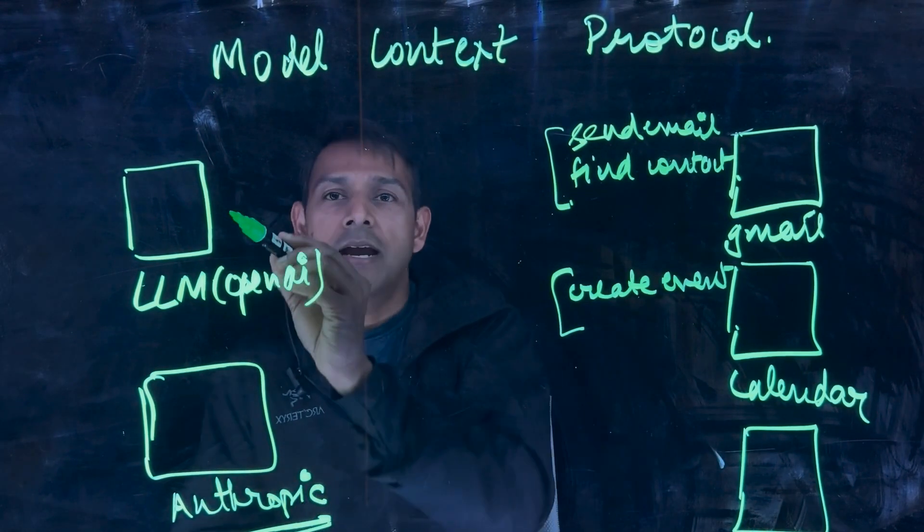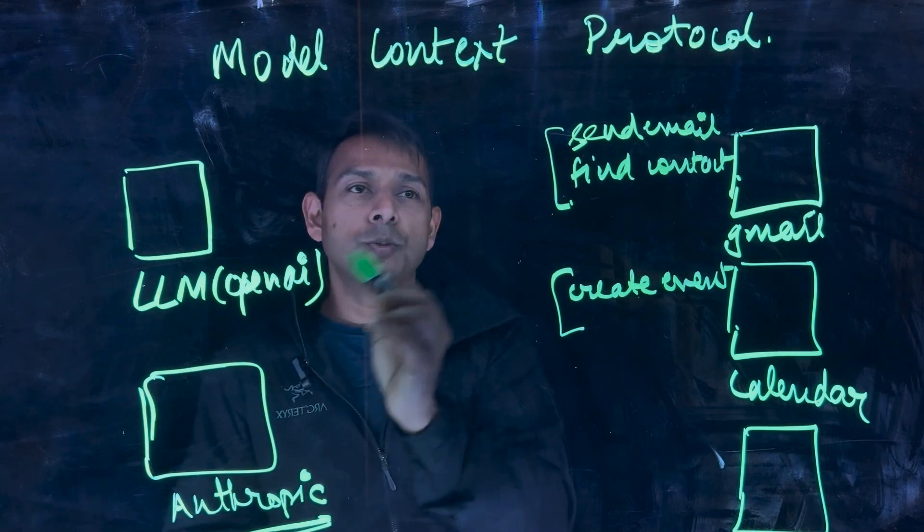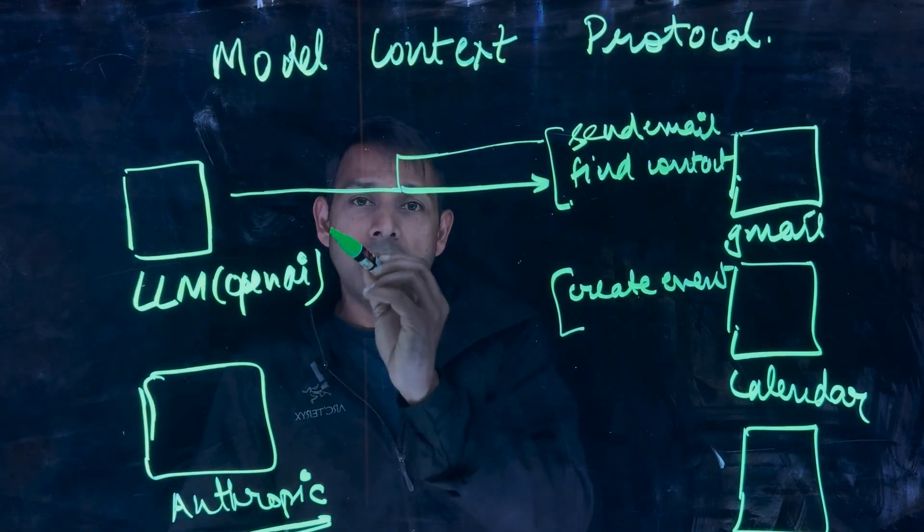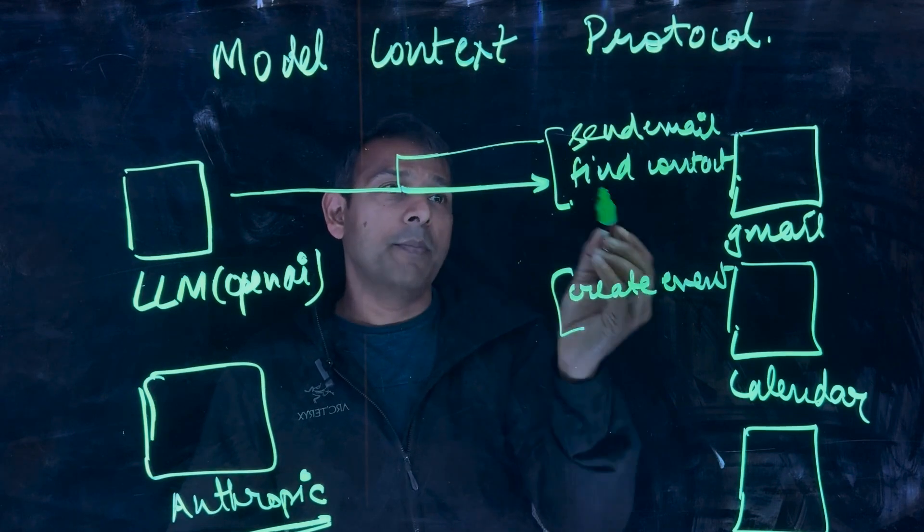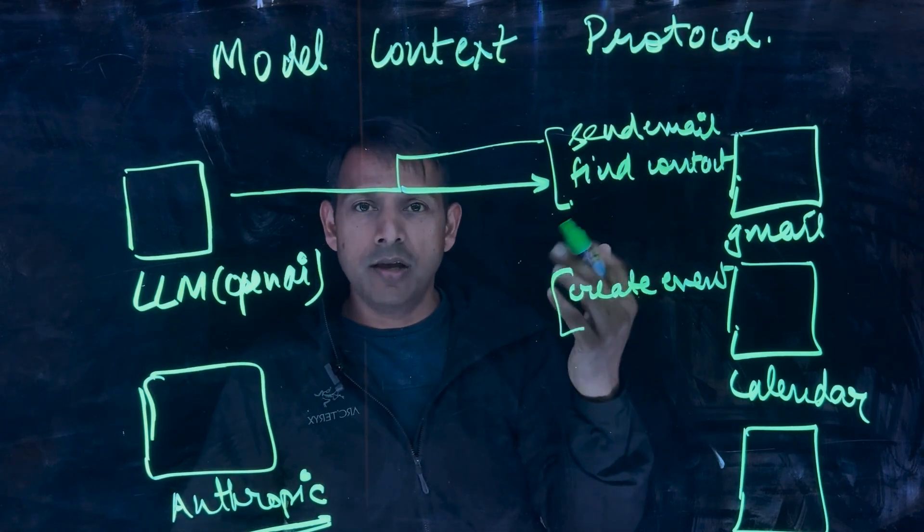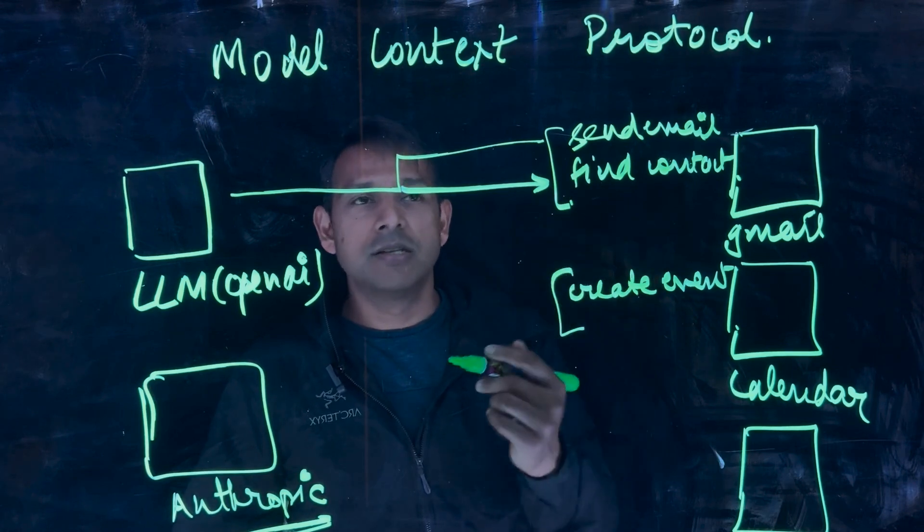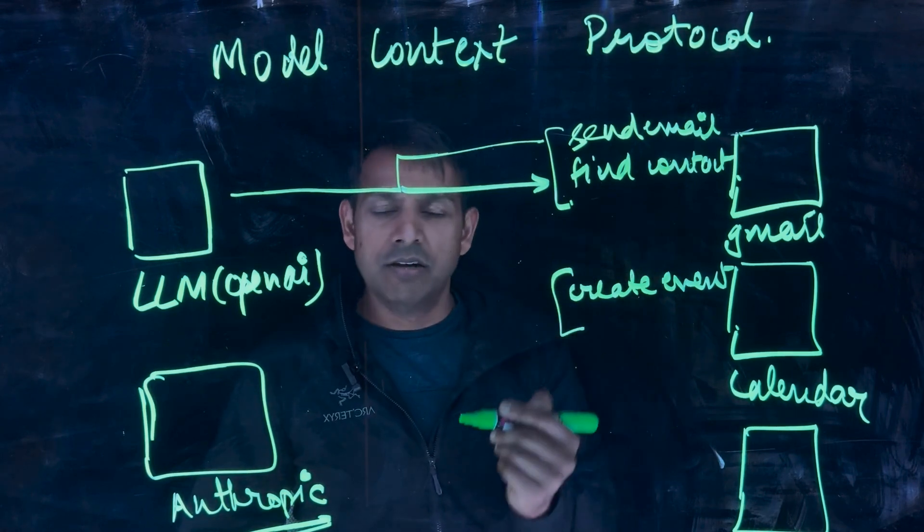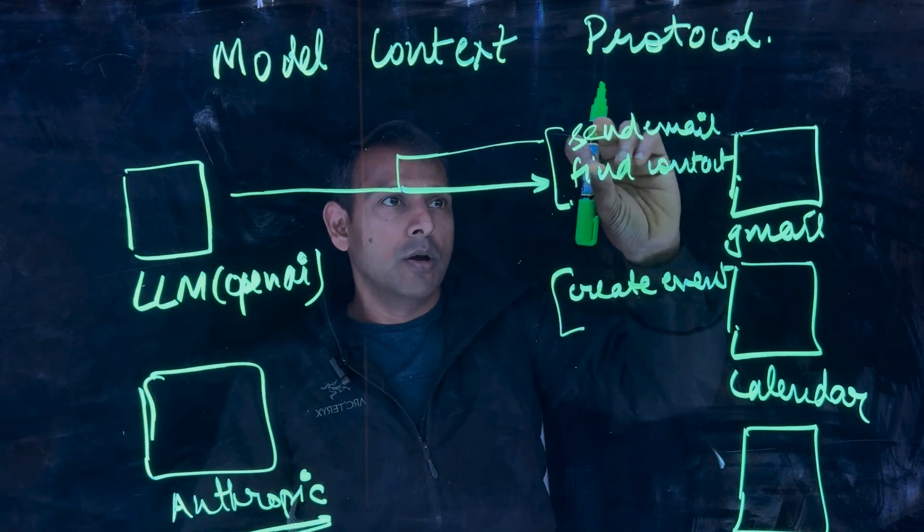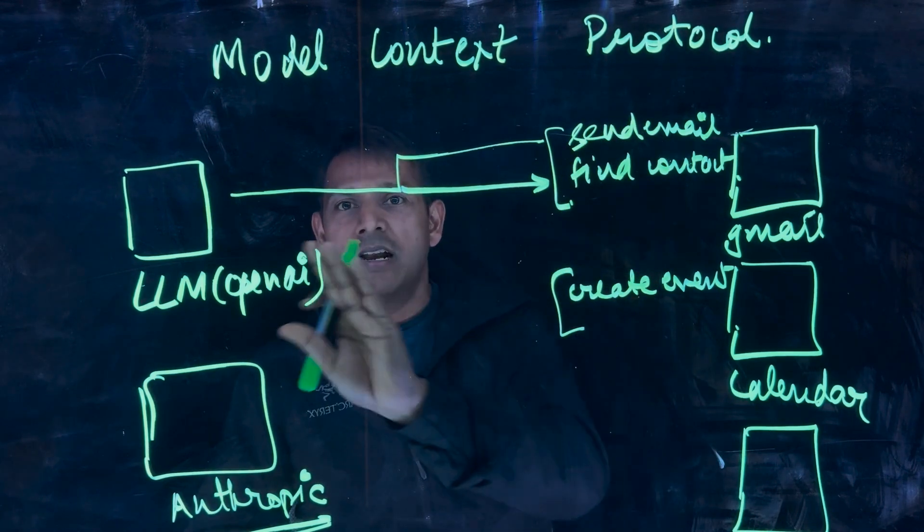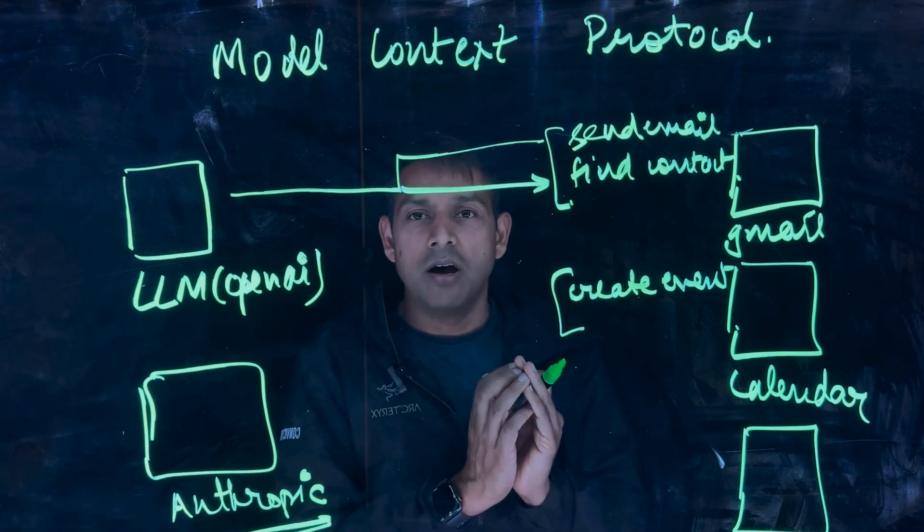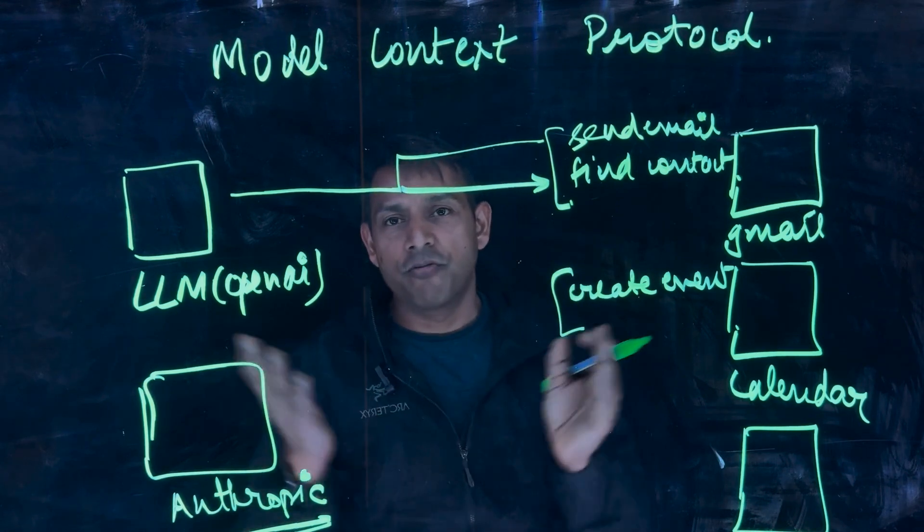And on this side, LLMs need to be able to understand what are the functions available to it for calling and what are the parameters needed by each function. For example, for send an email, you need the body, you need the email address, you need the subject. For creating an event, you need dates, time, time zone, etc. So these become functions and the LLM now needs to understand what are the different functions available, what are the different tools available to perform a task.